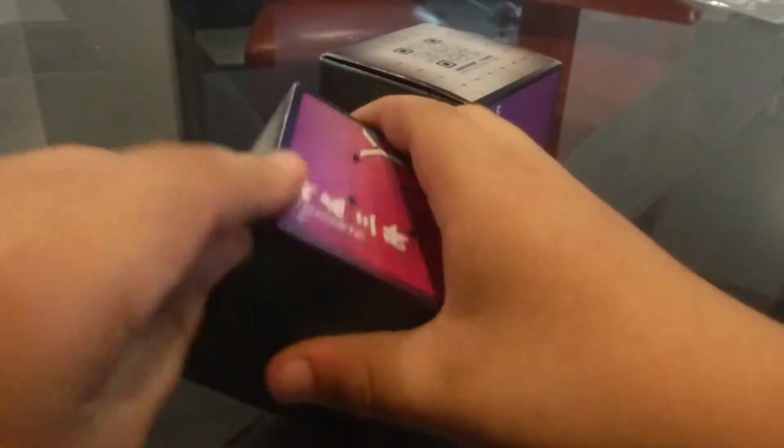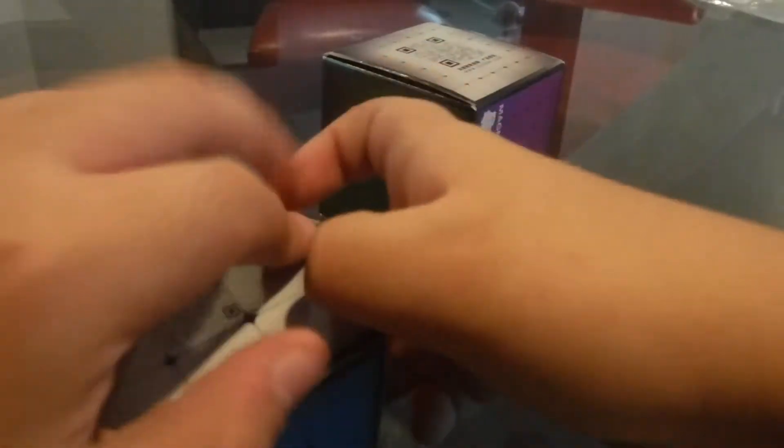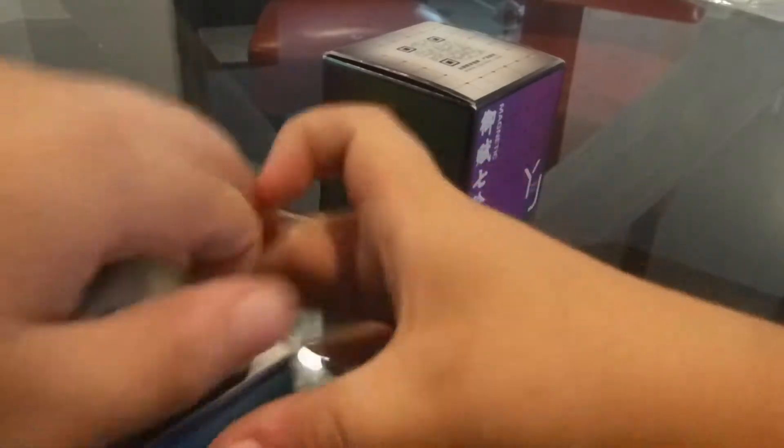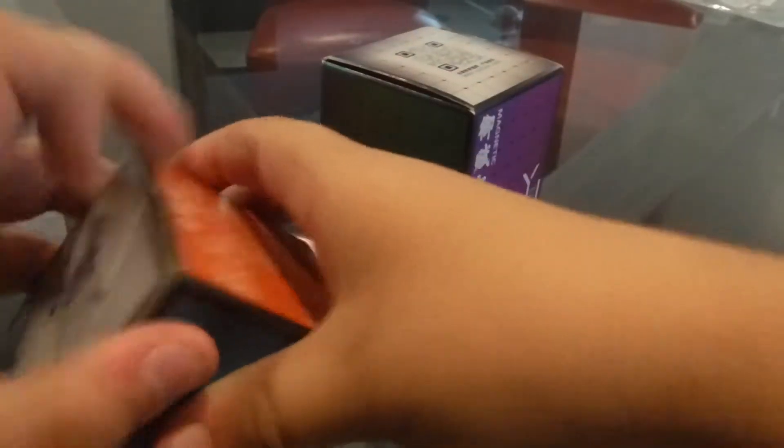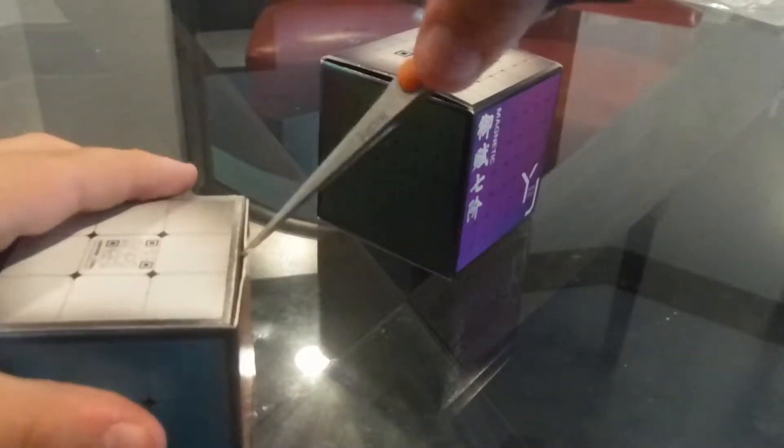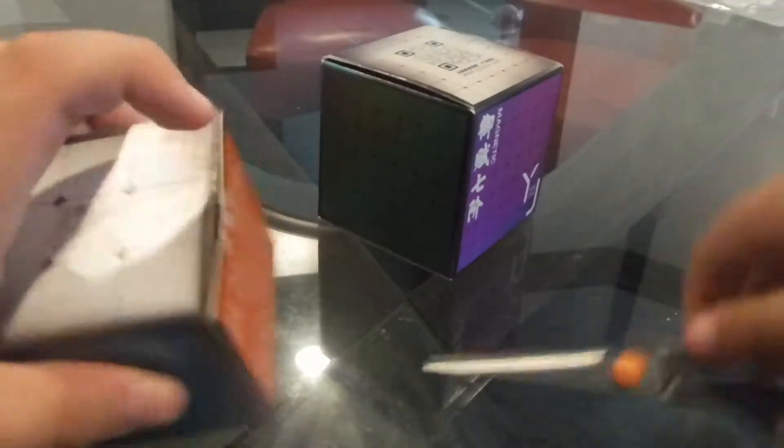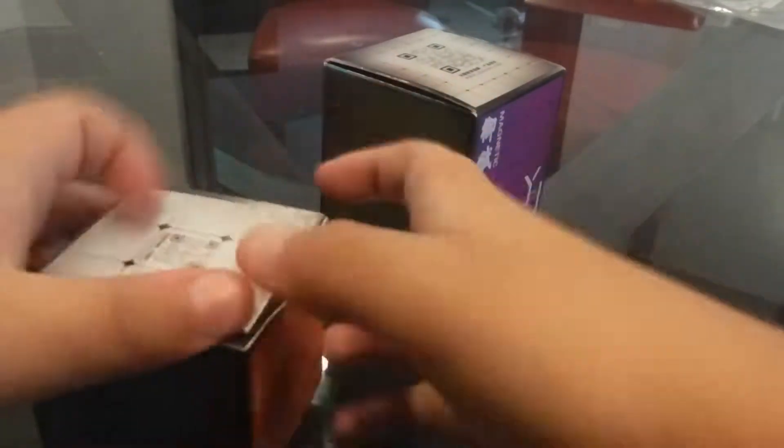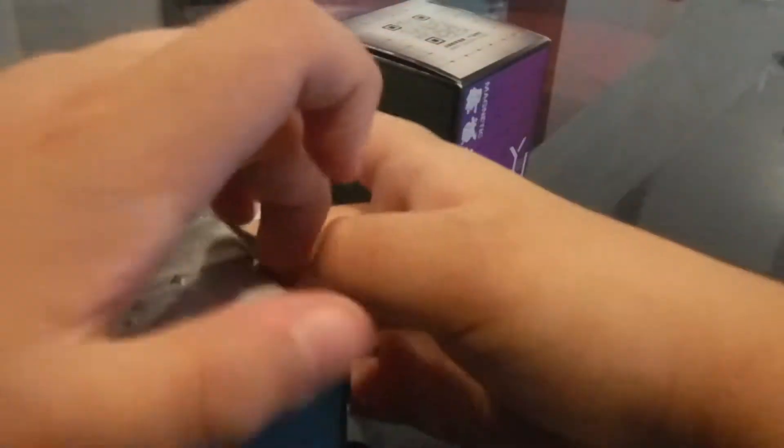So let's first unbox this 3x3. Here we go. I'm trying not to break the box because it kind of looks cool. I don't know how to describe it. If I can get this open without having to destroy the box, that'd be good. This is so tight. I do not remember YJ boxes being like this. There. Okay, finally.